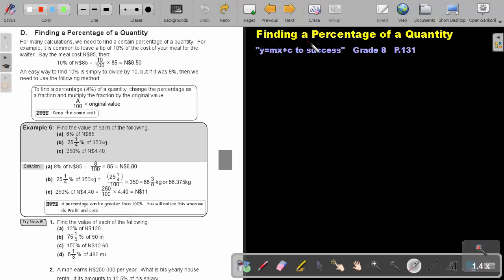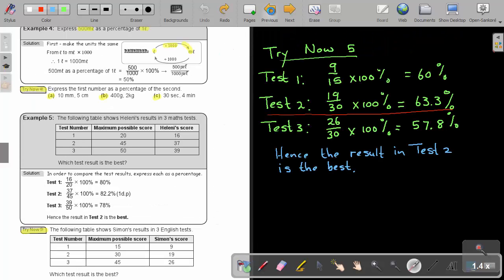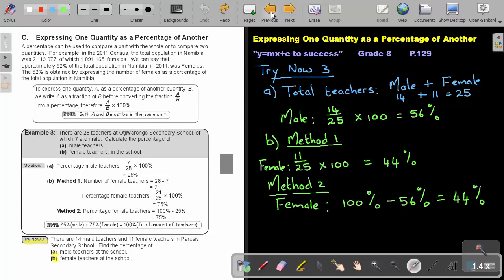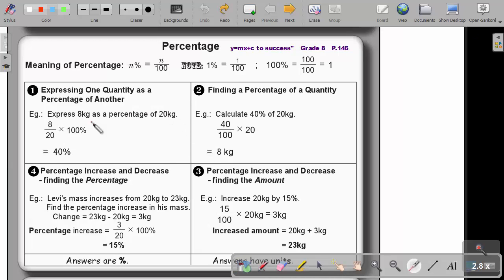Part 4. Finding a percentage of a quantity. You will find this on page 131 in the Namibia Mathematics Grade 8 textbook y equals mx plus c to success.